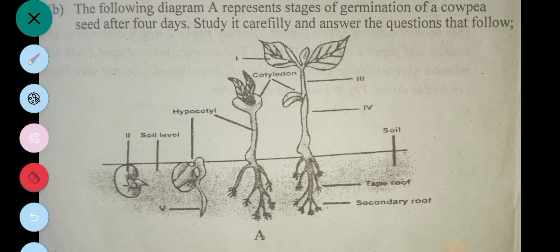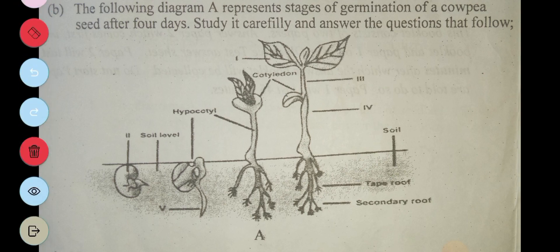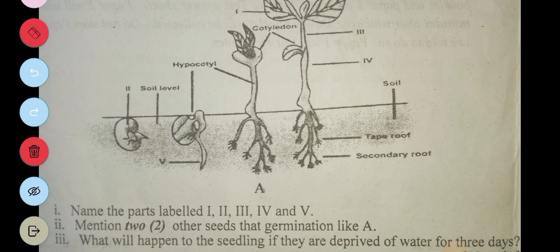So the following diagram A represents stages of germination of the cowpea seed after four days. Study carefully and answer the questions that follow.